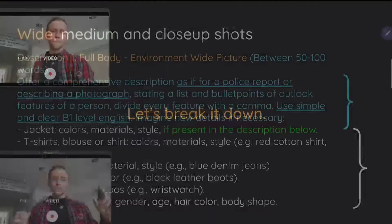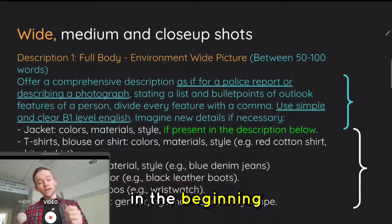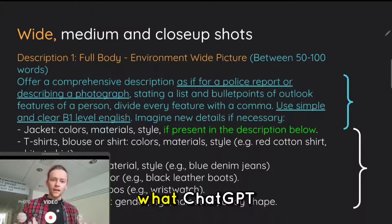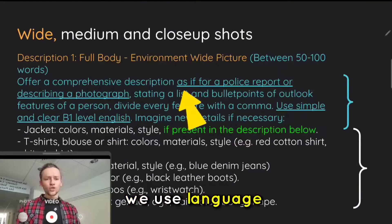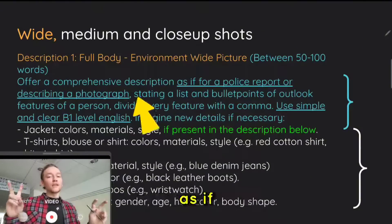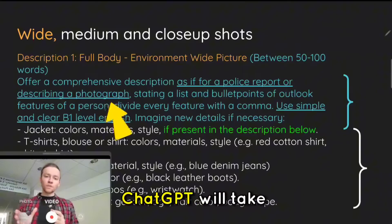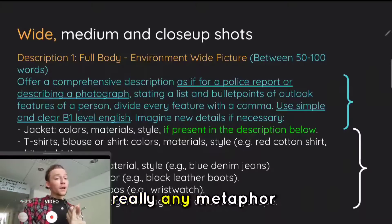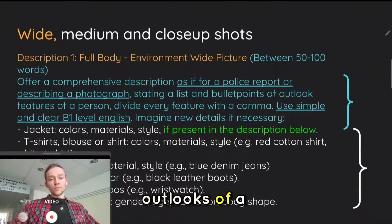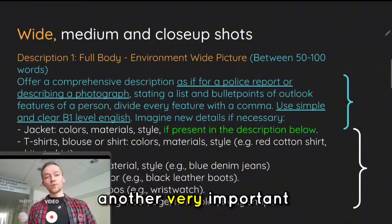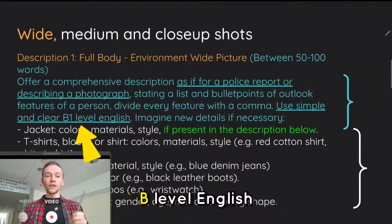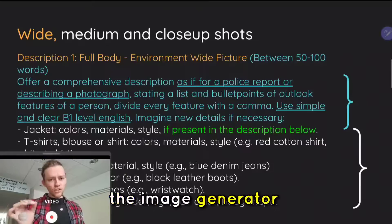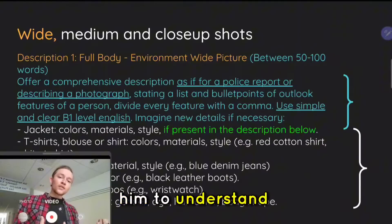So let's break it down. If you're interested in how this prompt was created, at the beginning we just say 'environmental white picture' and between 50 to 100 words. Then we describe what ChatGPT is actually supposed to do. We use language like 'as if describing a police report' or 'as if describing a photograph.' This way ChatGPT will match that style, which means no metaphoric language — only describing the appearance of a person. Another very important part is to use simple and clear B-level English, not because it would be too complicated, but because the image generator finds easier language simpler to understand.